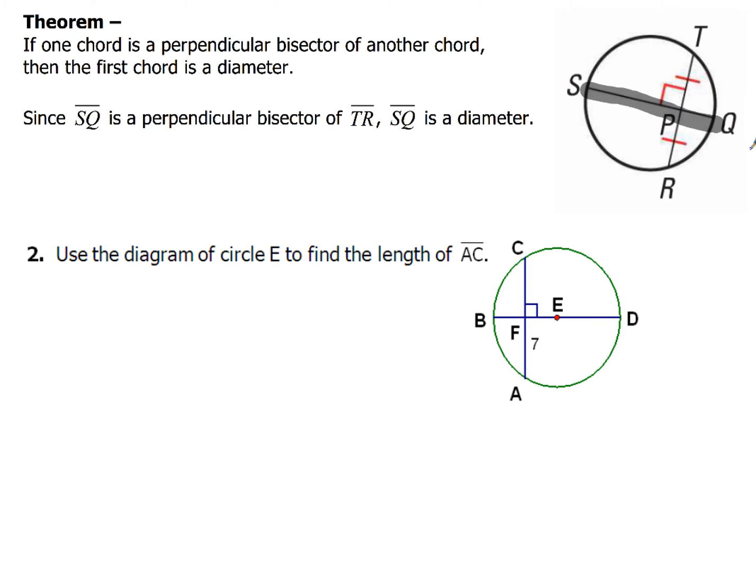Take a look at example 2. Use this diagram of circle E to find the length of AC. Now you've got to be careful here. We're told that from A to F, that amount is 7. That means from F to C, this part is going to be 7. A lot of times people make the mistake and go, oh well that's just 7. But AC is actually this whole piece. So AC is going to be from here all the way down here, so AC is going to have a value of 14.